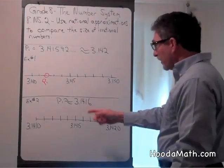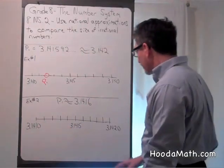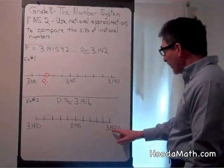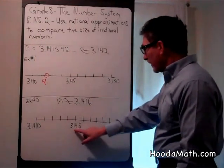So we go here and we say it's between 3.1410 ten-thousandths and 3.1420 ten-thousandths. This is right in the middle.